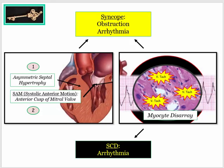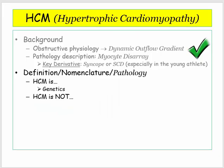Here is the key take-home from the first section: either outflow obstruction or arrhythmia can account for syncope. However, sudden cardiac death as a clinical endpoint results from the dysrhythmia associated with myocyte disarray. Let's move on to the definition and nomenclature associated with this disorder, and circle back to another component of the pathology.